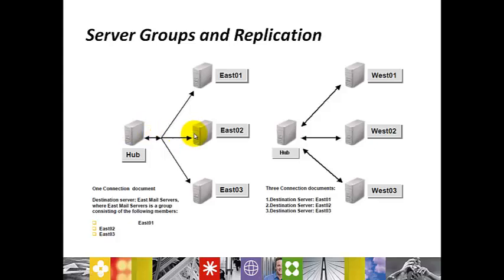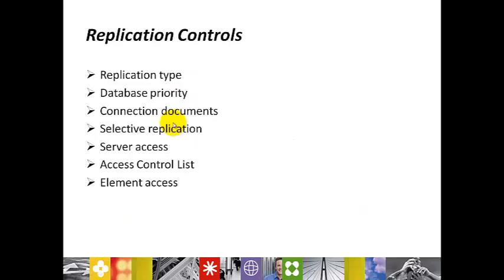This is the advantage of creating server groups for the replication purpose. And for replication controls, you can control the replication by the type of replication, database priority, connection document, selective replication, server access, ACL, and element access. These are the replication controls you can use on the type of replication.